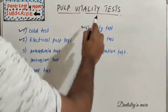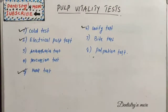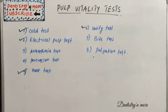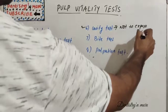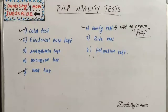Next we have the cavity test. This method should be used only when all other test methods provide inconclusive results. The tooth is not anesthetized and is drilled with a round bur with water coolant — it is a last resort since it is not very ethical. The patient is asked if they feel any pain during drilling. You must never expose the pulp, and after the test the cavity must be refilled.